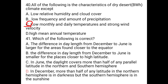Question number 41: Which of the following is correct? A. The difference in day length from December to June is larger for areas found closer to the equator. B. The difference in day length from December to June is smaller for places closer to high latitude. C. In June, the daylight covers more than half of any parallel latitude in both northern and southern hemispheres. D. In December...